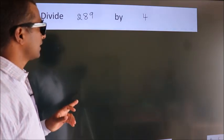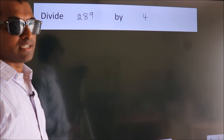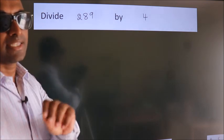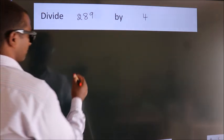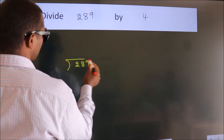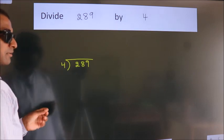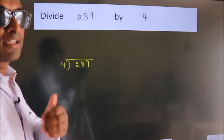Divide 289 by 4. To do this division we should frame it in this way. 289 here, 4 here. This is your step 1. Next.